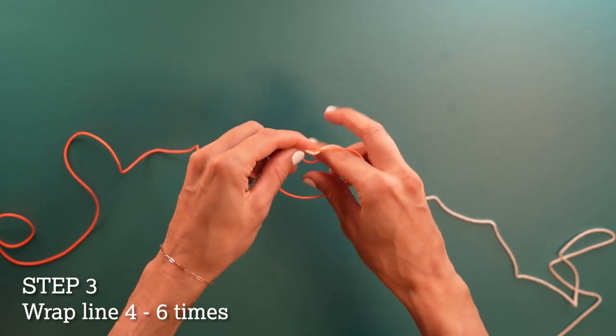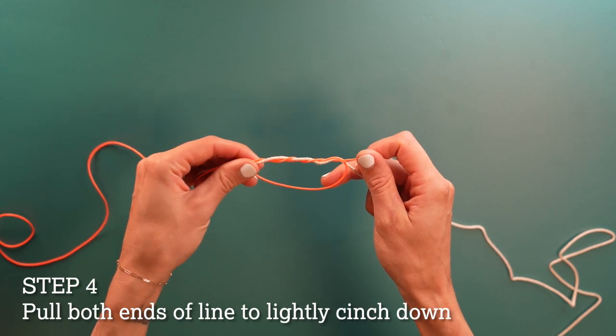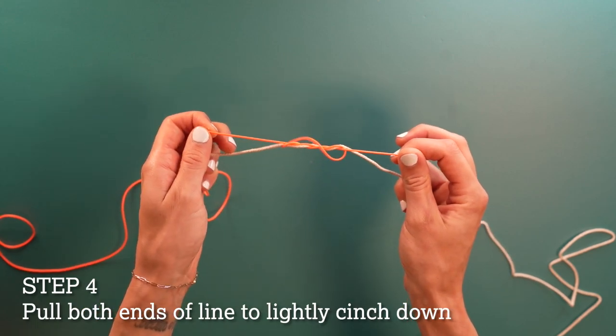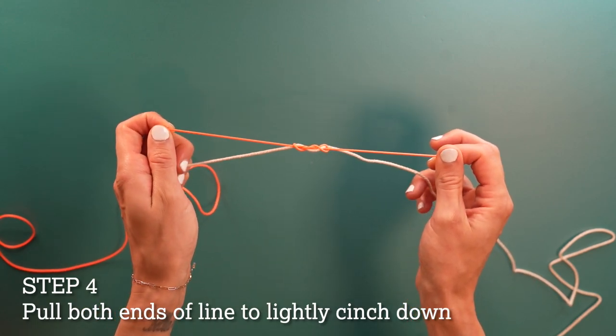Wrap the line around four to six times. Holding both ends of the line, lightly pull to cinch down but don't tighten all the way just yet.